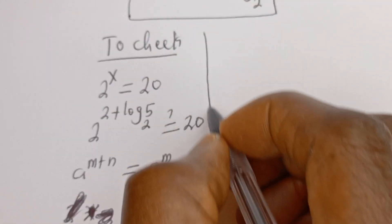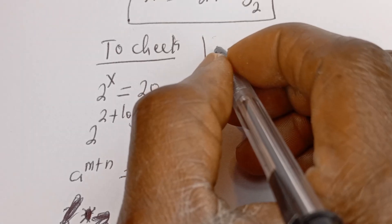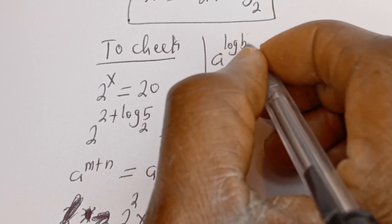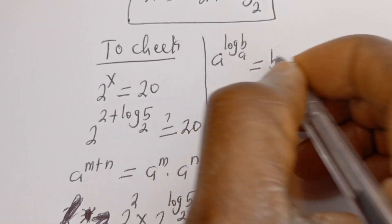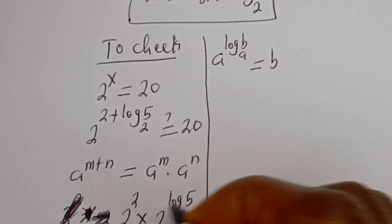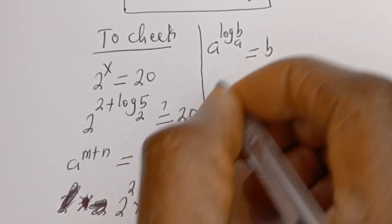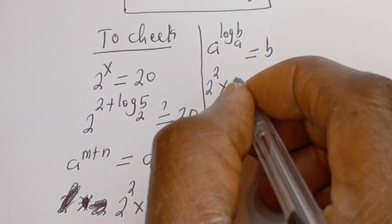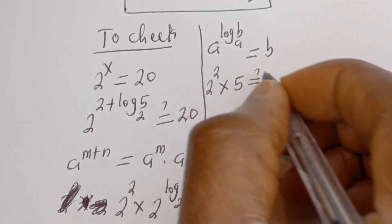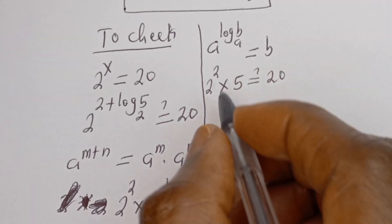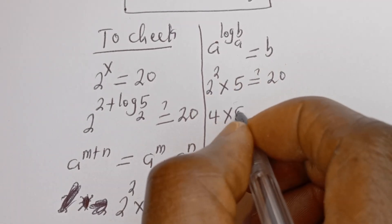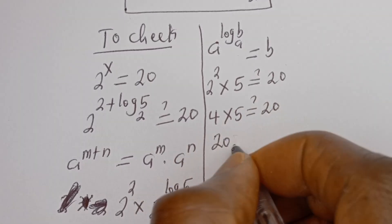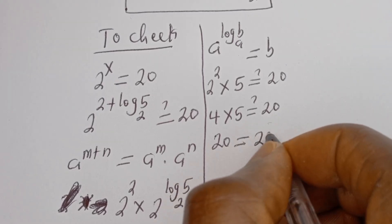Also take note: if you have a to the power of log b base a, this is equal to b. Then this can be written as 2 squared multiplied by 5 must equal 20. That is 4 multiplied by 5 must equal 20. Then 4 times 5 is 20, which equals 20 — this is true.